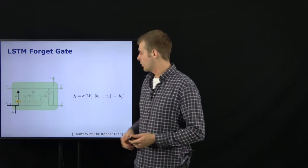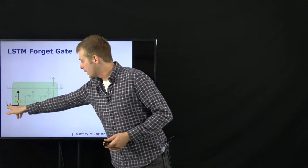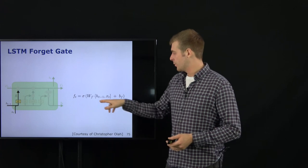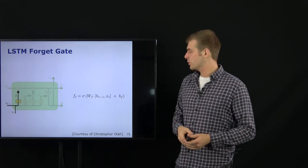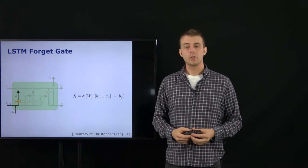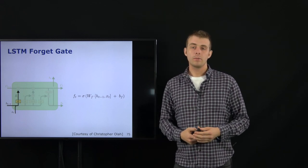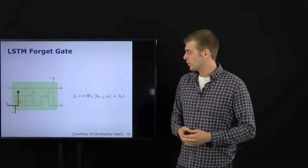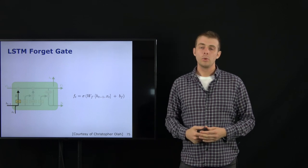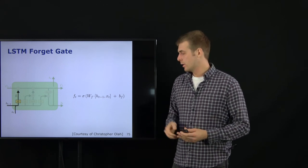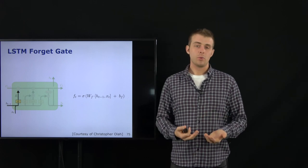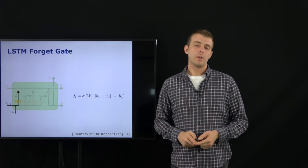The first part is the forget gate: we take input x_t and the previous hidden state h_{t-1}, apply a projection with learnable matrix W_f and bias b_f, and a sigmoid activation function so values of f are between zero and one. This vector determines which parts of the cell state to carry forward and which to forget — a zero for a specific entry means forgetting that position in the cell state, and a one means keeping it.